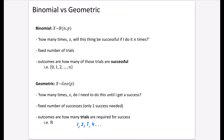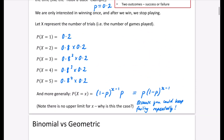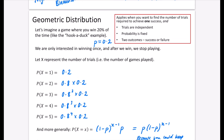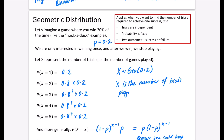You can't have zero because you can't be successful with zero trials. So for the previous example, X has a geometric distribution with a probability of 0.2, where X is the number of tries playing the game until a prize is won.